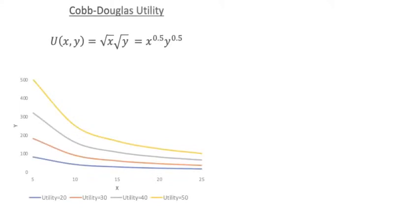You may be wondering how quasi-linear indifference curves are visually distinct from Cobb-Douglas indifference curves. To illustrate the distinctions, here are indifference curves at 4 utility levels for a Cobb-Douglas utility function, where utility is equal to square root of x times square root of y.